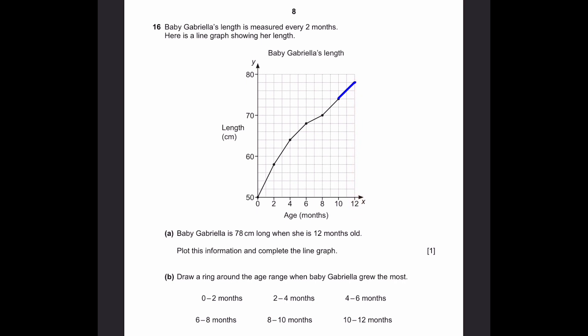Part B: Draw a ring around the age range where baby Gabriela grew the most. That's simply going to be the one where she has the highest increase, or which means the gradient is the highest. And you can see that this one has the highest gradient, and it's 50 to 58, so that's 8cm in just 2 months, which is 0 to 2 months. That's higher than any of the others.